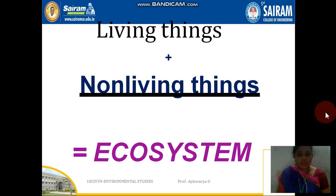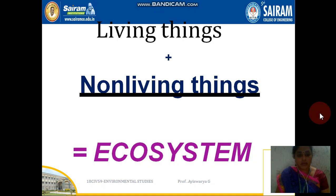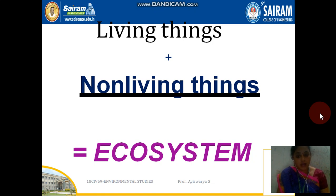In my previous lecture I gave a brief description about what is meant by environmental studies, what is meant by the surroundings, and how to protect the environment. In this presentation we shall see more detailed things about the ecosystem. Ecosystem is everything which surrounds us — environment includes living things, non-living things, man-made or artificial environments, and how to protect them. Ecosystem specifically deals with living and non-living things — living things like plants and fungi.